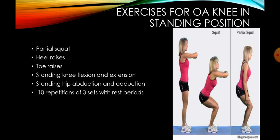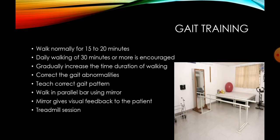Exercises for OA knee in the standing position: squatting can be done, partial squat can be done, heel raises, toe raises, standing knee flexion and extension, and standing hip abduction and adduction. All these exercises can be done for 10 repetitions of 3 sets with rest periods in between.